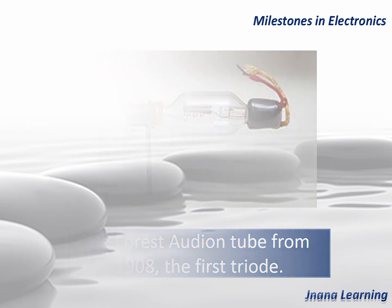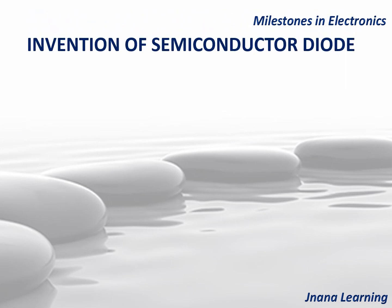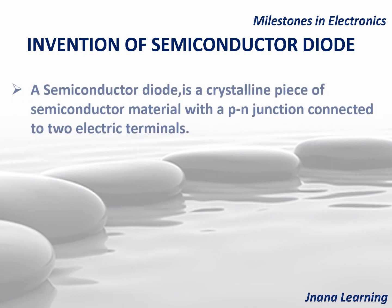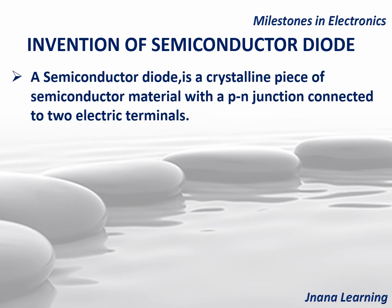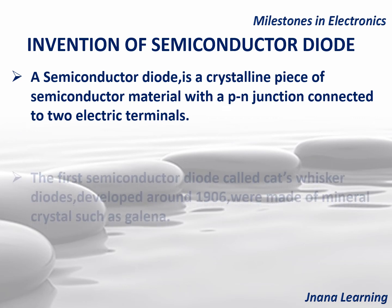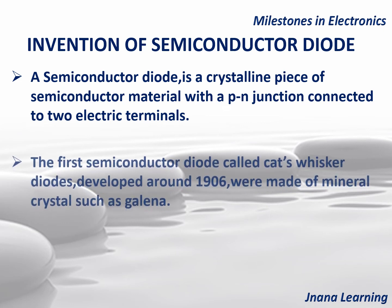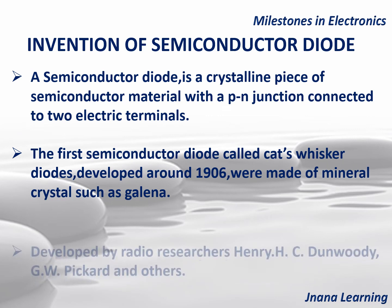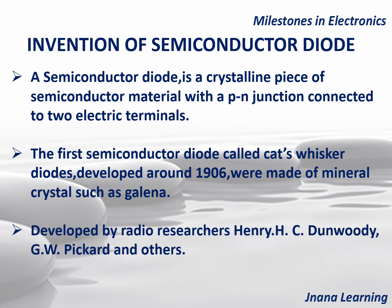The next major invention is the semiconductor diode. A semiconductor diode is a crystalline piece of semiconductor material with a p-n junction connected to two electric terminals. The first semiconductor diode, called the cat's whisker diode, was developed around 1906 and was made of mineral crystals such as galena. It was developed by radio researchers H.H.C. Dunwoody, J.W. Pickard, and their co-workers.